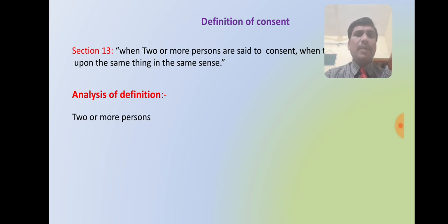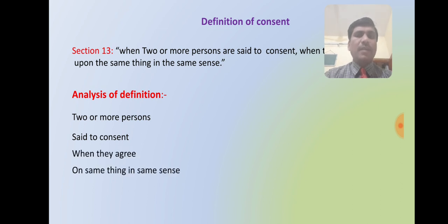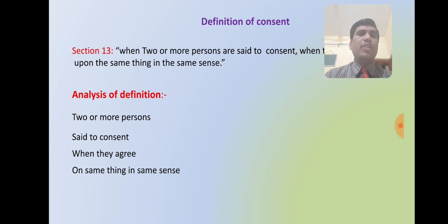Section 13 provides some essential elements. Two or more persons are said to consent when they agree on the same thing in the same sense. The parties must agree on each and every aspect of the contract in the same way; there should be no variation between them. This is what is called consent.